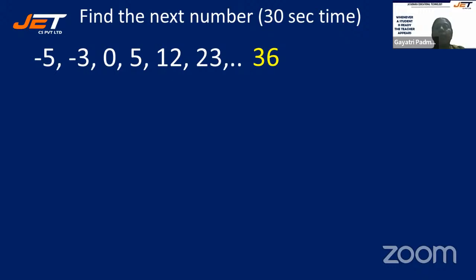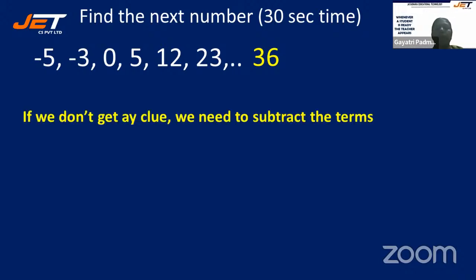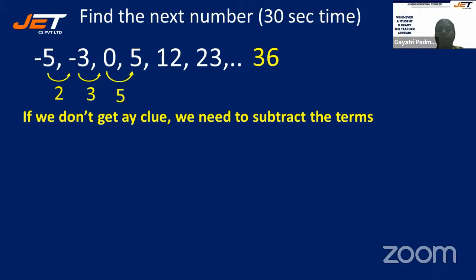Next question: −3, −5, −3, 0, 5, 12, 23. If we do not get any clue, we subtract the terms. −3 minus (−5) is +2, 0 minus (−3) is +3, 5−0 is 5, 12−5 is 7, 23−12 is 11.